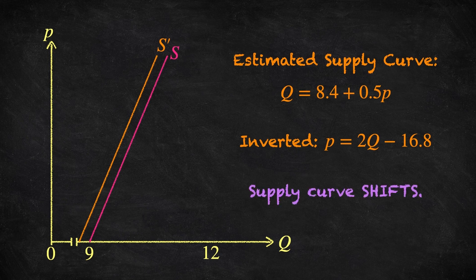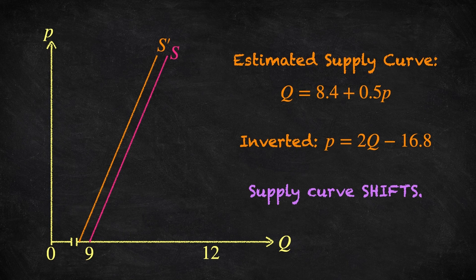The change in the price of cocoa has shifted the supply curve for coffee. The slope is the same, so it's a parallel shift, but the intercept with the price axis changed from negative 18 to negative 16.8. Summing up, changes in the price of coffee cause movements along the supply curve, changes in other variables cause shifts of the supply curve.